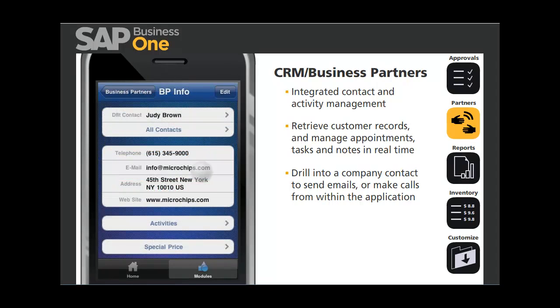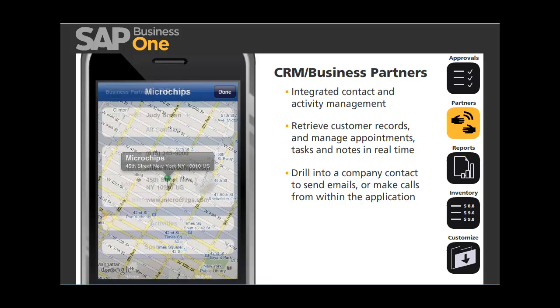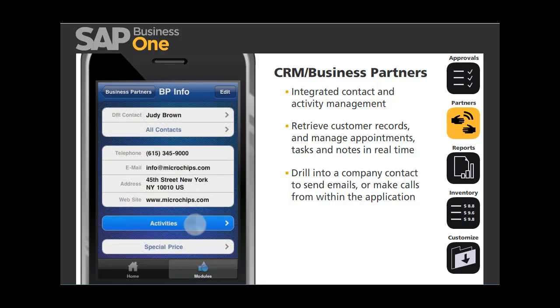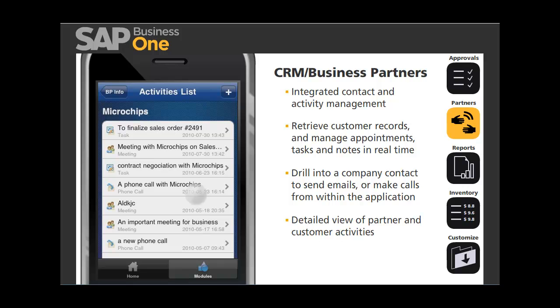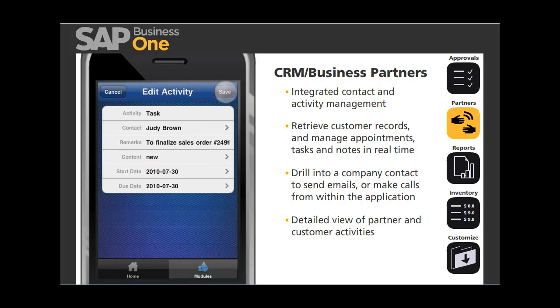When you're on the road, you can even locate your customers using the integrated map. With this mobile app, you're provided with a detailed view of partner and customer activities with the ability to edit any activity on the fly. Once you're in the activity, you can change the description, manage the timing, and also add notes. There's no need for manual synchronization, as all changes are automatically synchronized with the SAP Business One application on the back end.